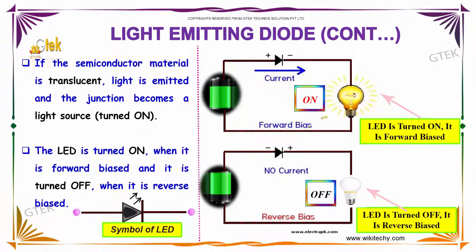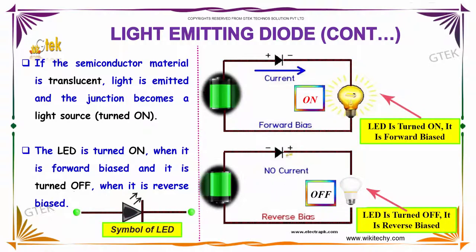The LED is turned on when it is forward biased and it is turned off when it is reverse biased.